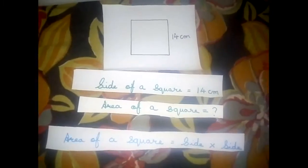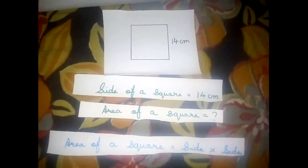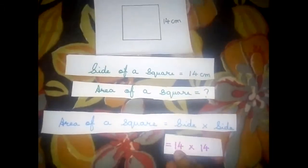Area of a square formula will be side into side. That is equal to 14 into 14.